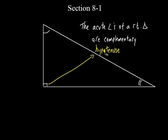We're going to use that word hypotenuse quite a bit later in the chapter. What are the other two sides of a right triangle called? If this one's the hypotenuse, the other two are called the legs — one leg and another leg. We're going to talk a lot about the hypotenuse, the legs, and all these angles later in the chapter.